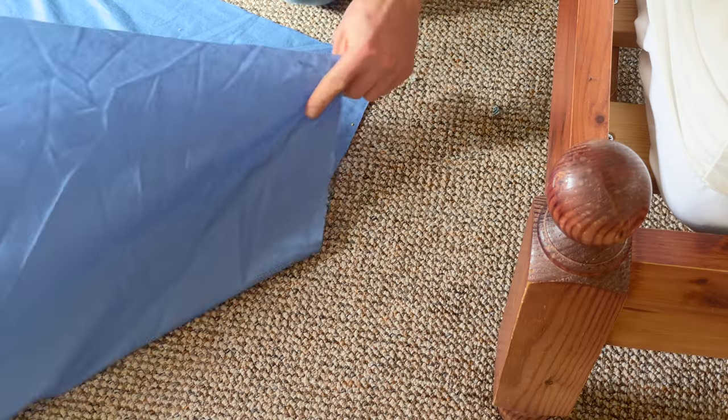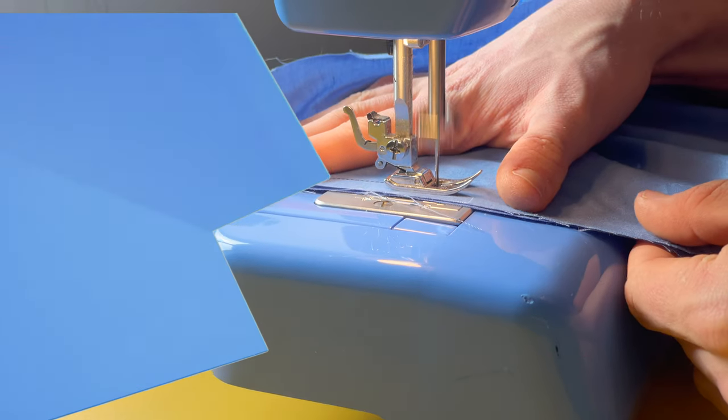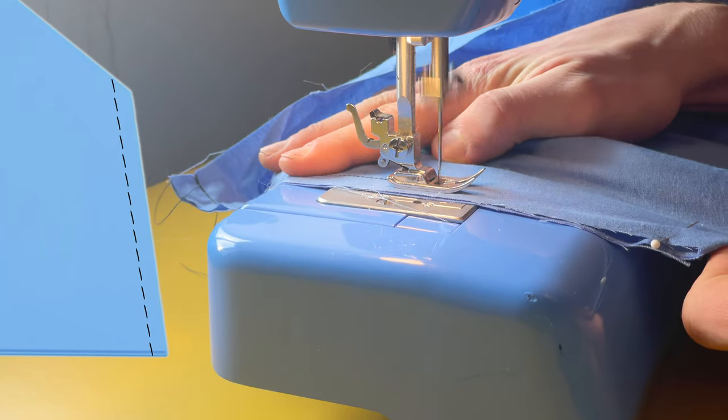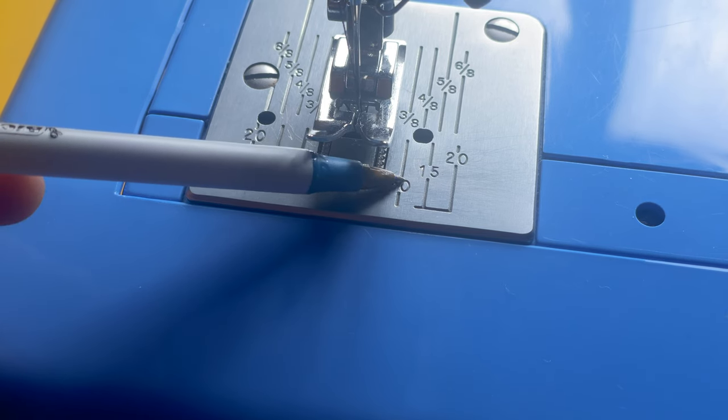Next fold and pin the adjacent edges of each corner. You'll be stitching these 15 millimeters from the edge. If your machine has no seam gauge apply some tape at the correct distance from the needle.